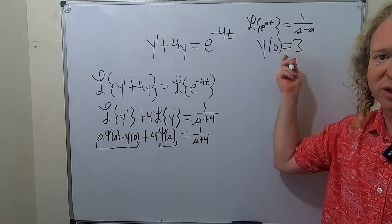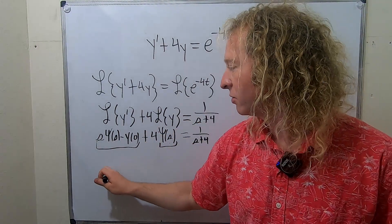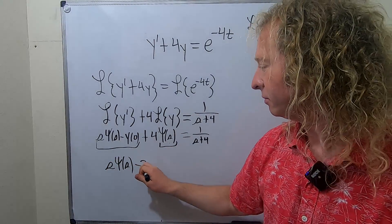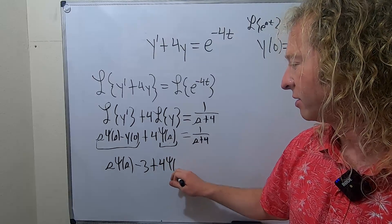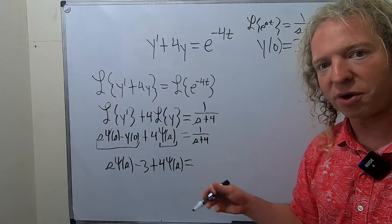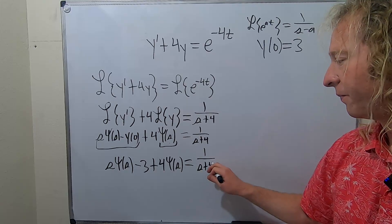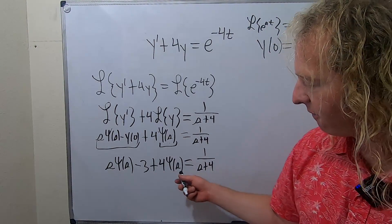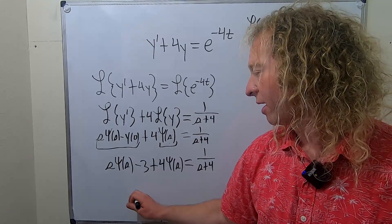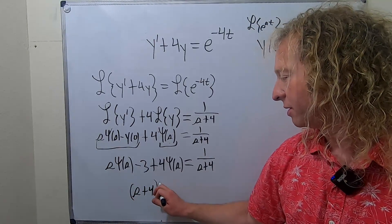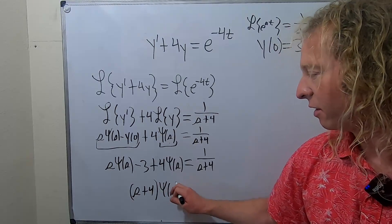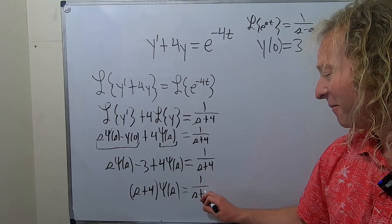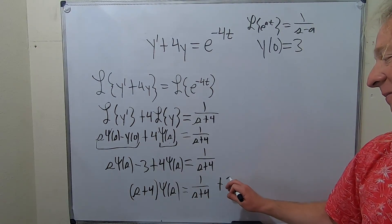Now we use our initial condition: y(0) equals 3, so we plug it in. This gives us s·ψ(s) minus 3, plus 4·ψ(s), equal to 1 over s plus 4. Next, we solve for ψ(s) — we'll add the 3 and factor out ψ(s): (s plus 4)·ψ(s) equals 1 over s plus 4, plus 3.